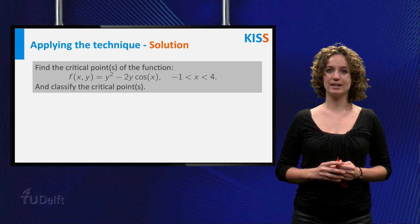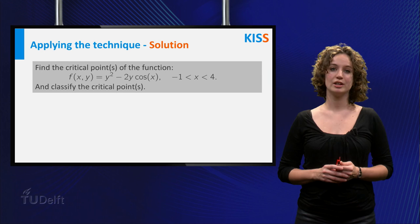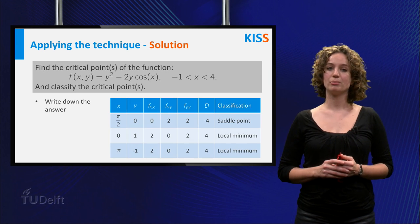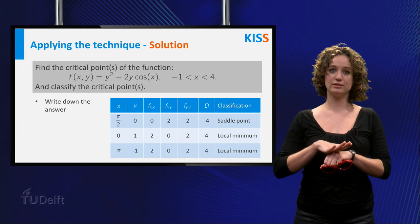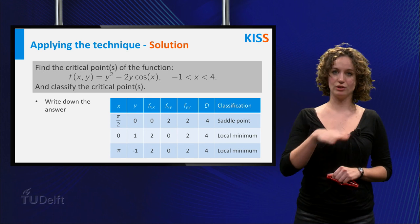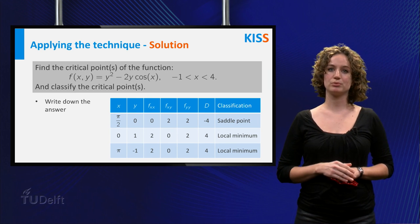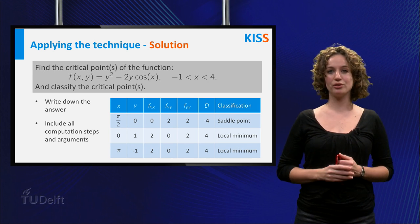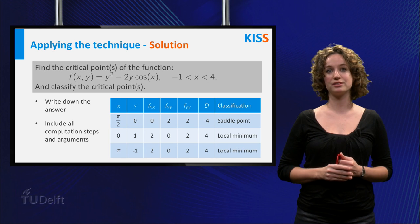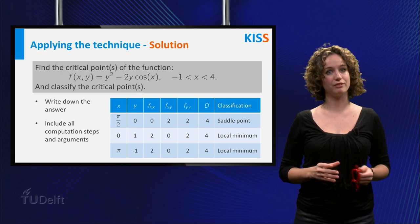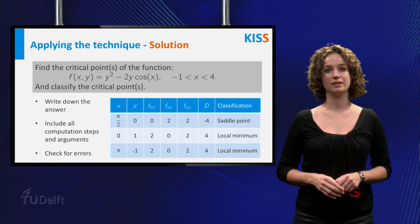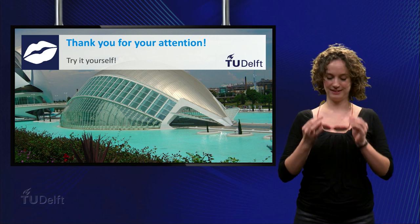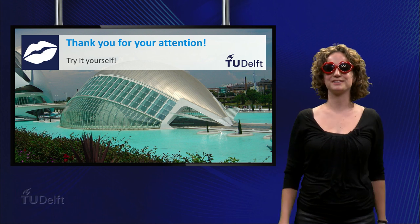This leaves only the last step of the KISS method: Solution. Be sure to write down your answer. In this case: (pi/2, 0) is a saddle point; at (0, 1), f has a local minimum; and at (pi, -1), f also has a local minimum. Do not forget to include all the computation steps from the skill part and check for errors. You have performed all steps and found the solution. Well done, and good luck with your exam!